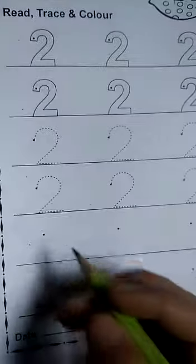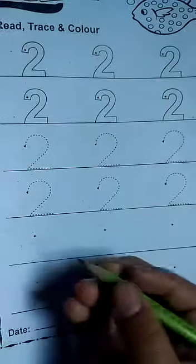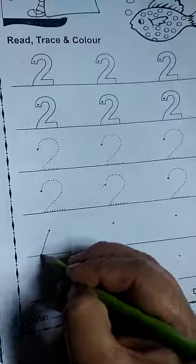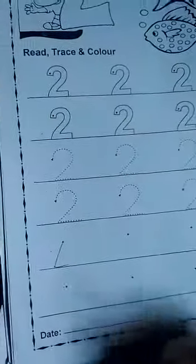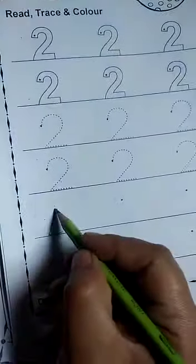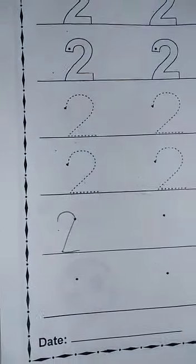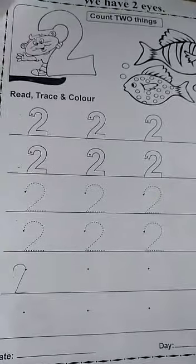One more dot, okay. Then make a straight line, then turn it. Then slightly turn. This is two. This is two. Complete your task. Thank you.